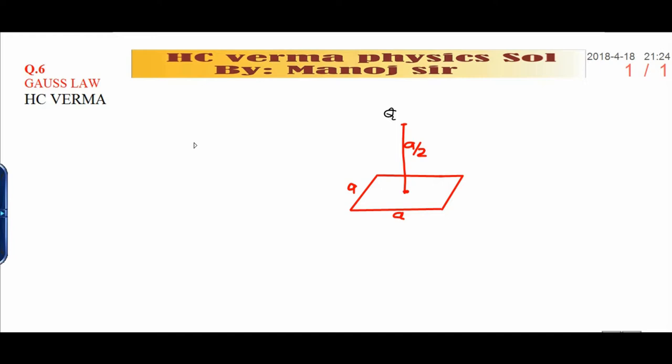Here you know, whenever you want to calculate the Gauss law, whenever you want to calculate the flux, we need an enclosed charge. In order to enclose this charge positive Q, you need to draw the Gaussian surface.